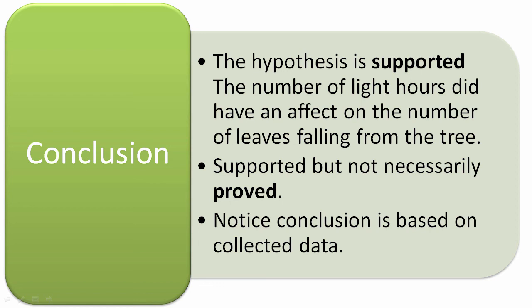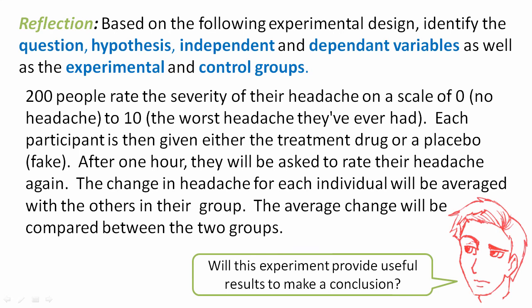Take what you know now and respond to the following experiment of 200 people reporting on headaches. Based on the experiment design listed below, read through it and identify what is the question being asked, write the hypothesis, identify the independent and dependent variables, and identify the experimental and control groups. Make sure that you respond in your notebook appropriately. I hope this has been helpful, and thank you for watching another WANIC Science video.